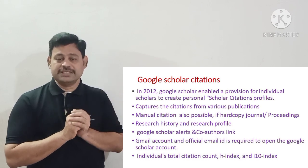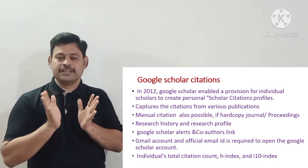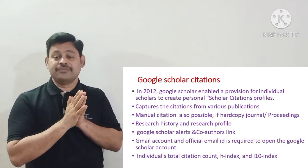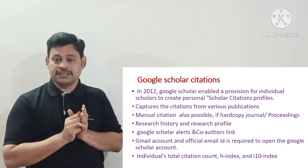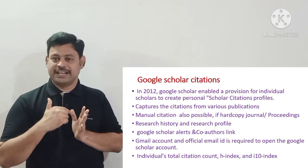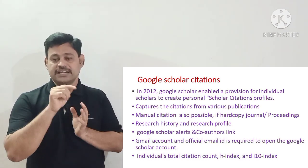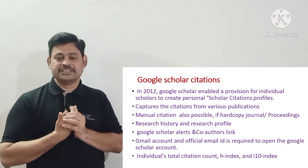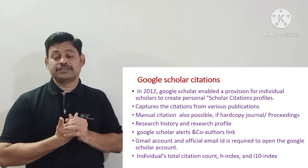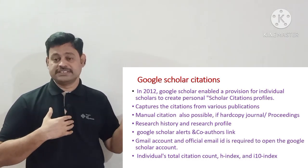Manual citation entry is also possible for articles that are only available in hard copy and not online. Google Scholar Citation clearly indicates the research history and research profile of every scholar. If you have a Google Scholar ID, anyone globally can refer to it. There is also a Google Scholar Alert feature — if you set an alert for a topic like additive manufacturing, you will immediately receive email notifications whenever a new article on that topic comes online. A co-author link is also available on your profile.